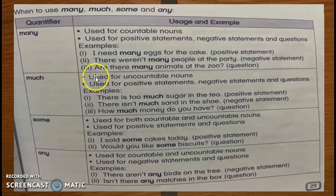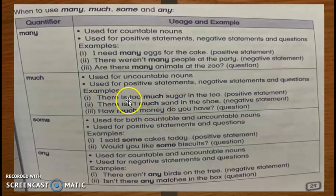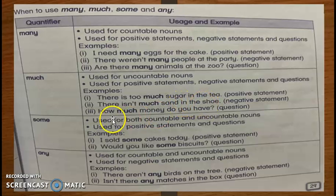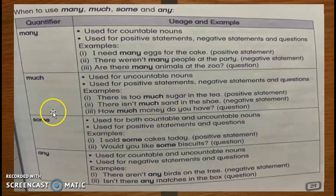Much — is used for uncountable nouns, untuk benda yang tidak boleh dikira. For example: there is too much sugar in the tea. There isn't much sand in the shoe. How much money do you have? Money is uncountable noun — tak boleh dikira.